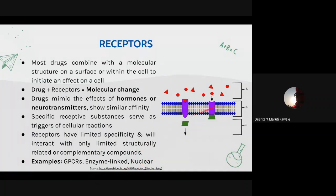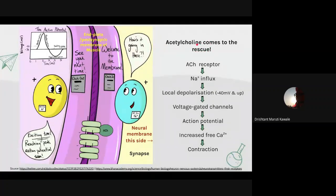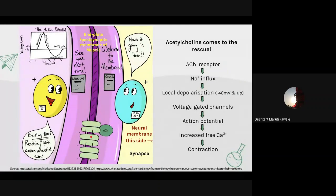Now let's take an example to understand drug-receptor interaction and the biological response. The graphic shows the membrane of a muscle cell. The end plate region — the synapse region of a skeletal muscle fiber — contains a large number of receptors having affinity towards the neurotransmitter acetylcholine. Acetylcholine is released from the neuron into the synapse, and this is the membrane of the muscle which has the receptors — these are ion channel-linked receptors.